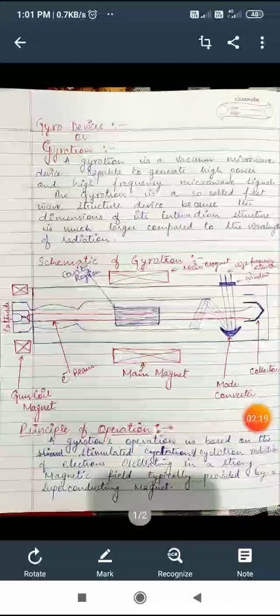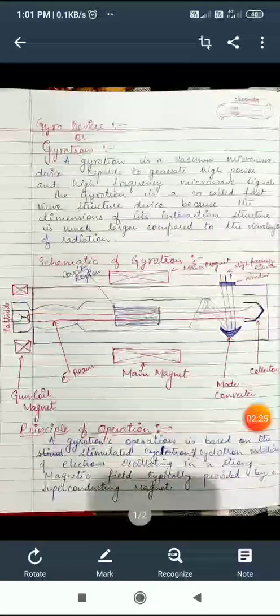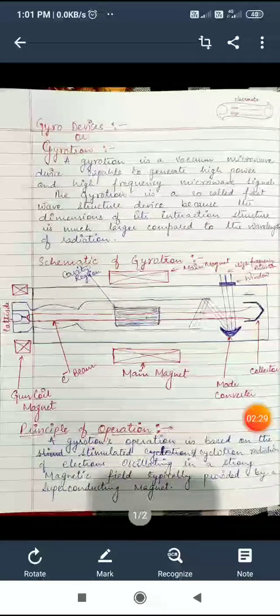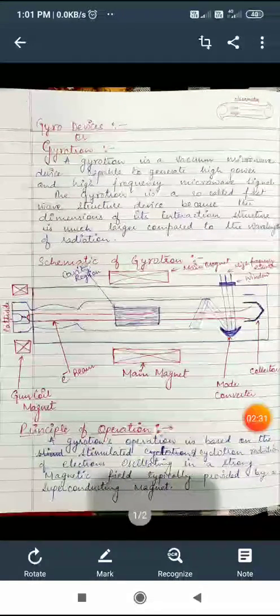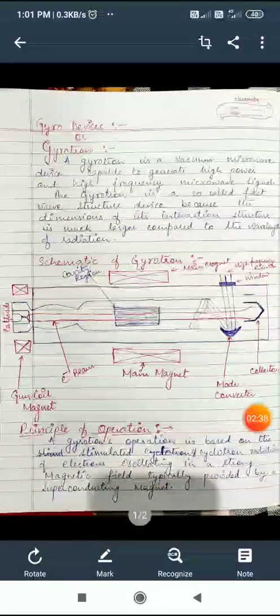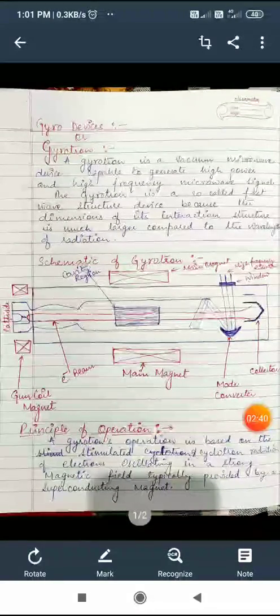The rest of the electron beam is collected through collector. The principle of operation of gyrotron is based on stimulated cyclotron radiation of electrons oscillating in a strong magnetic field.